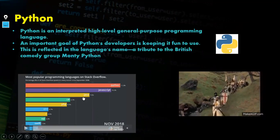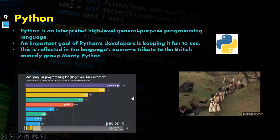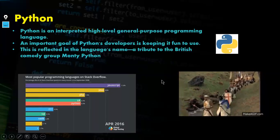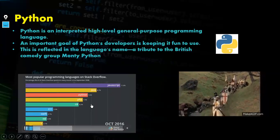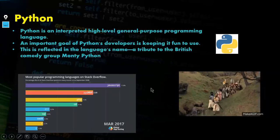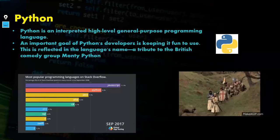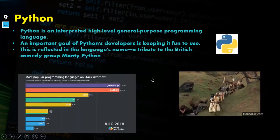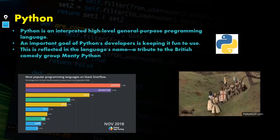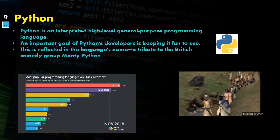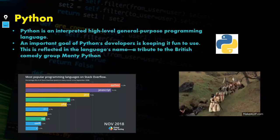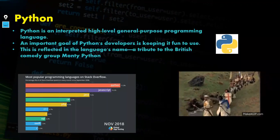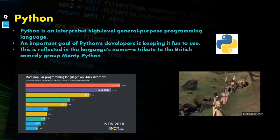Here you can see a chart showing the increase in Python adopters year over year. One important factor driving this growth is the flexibility of Python — you can use several available libraries to develop different applications, even in web development, data science, game development, and so on.